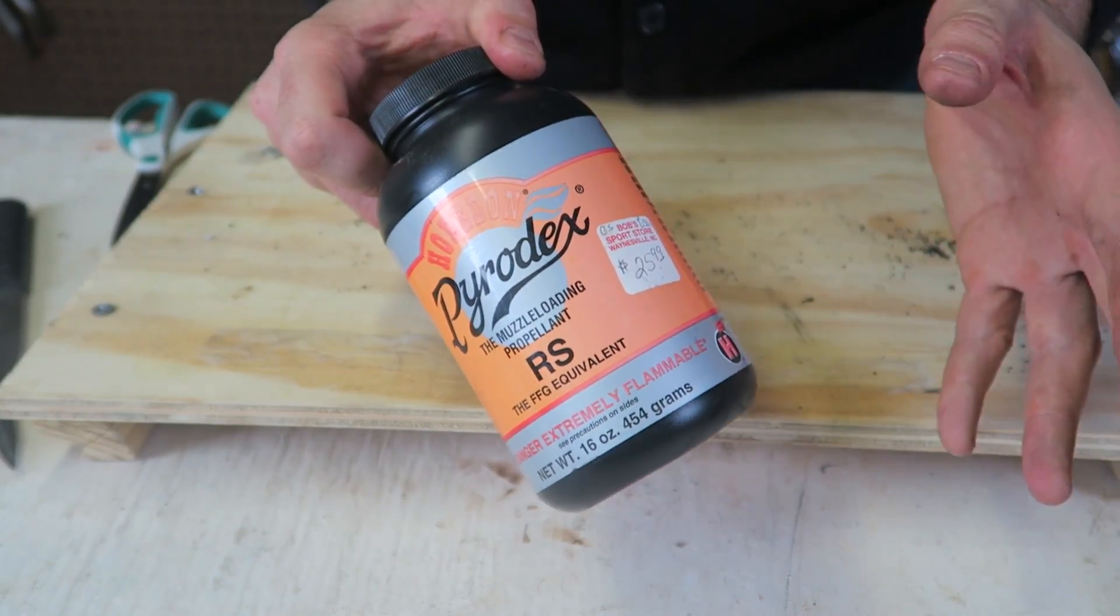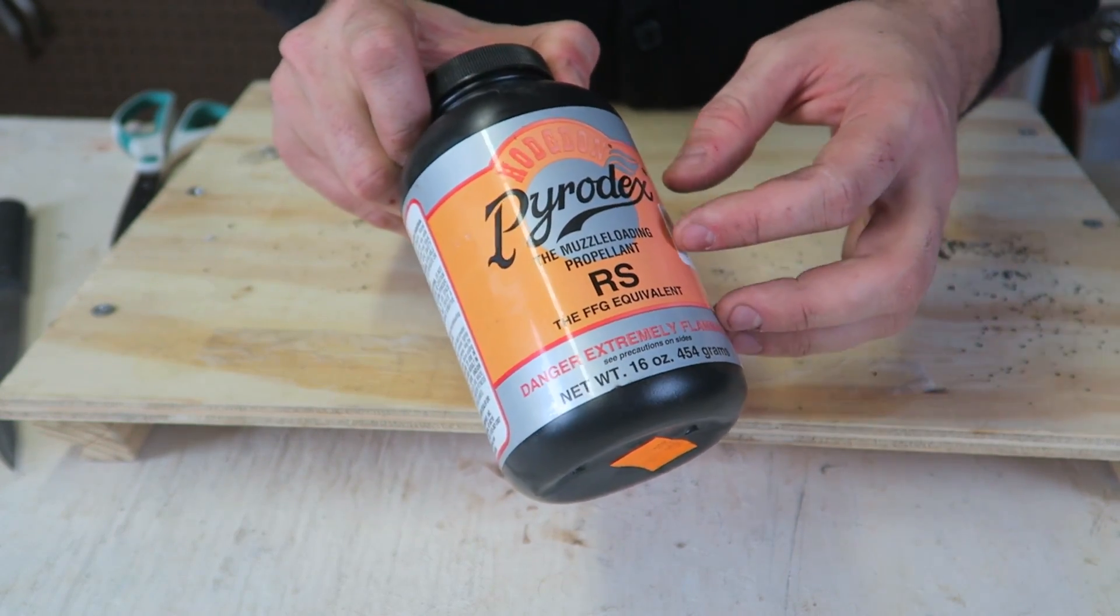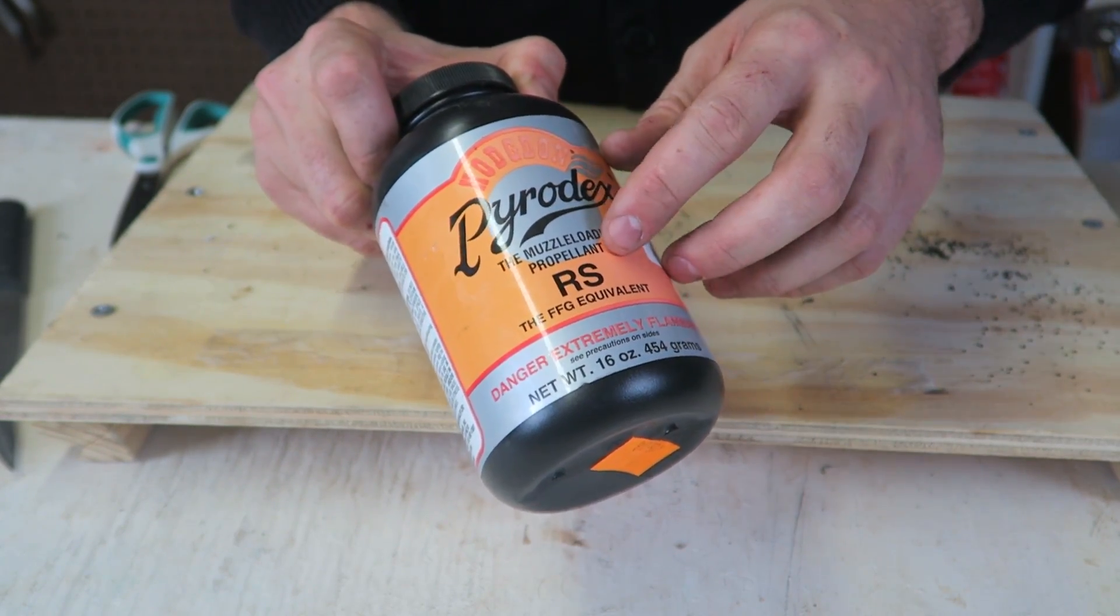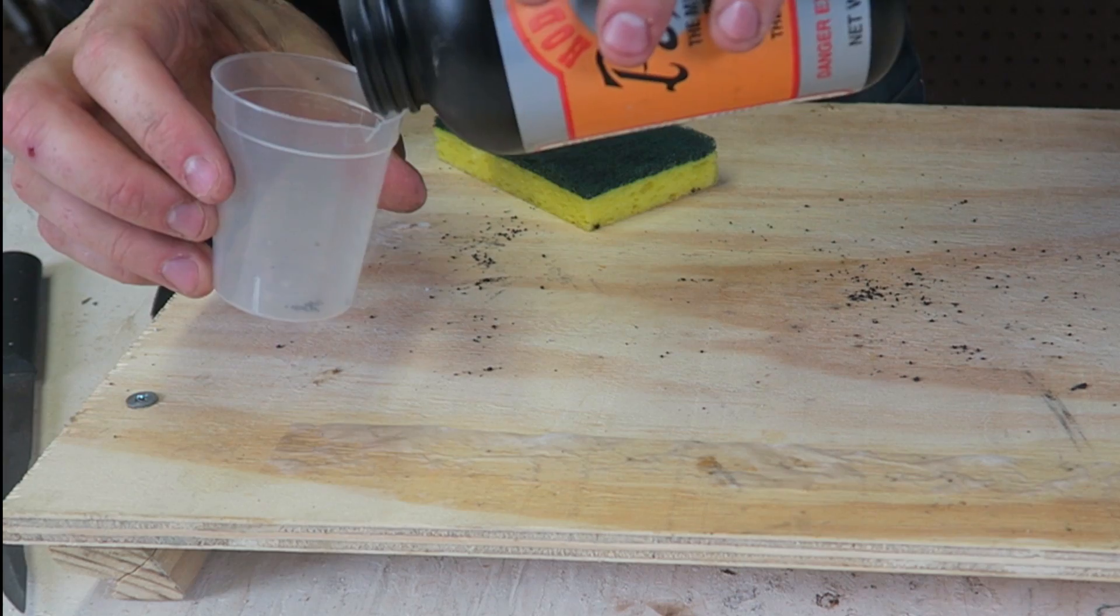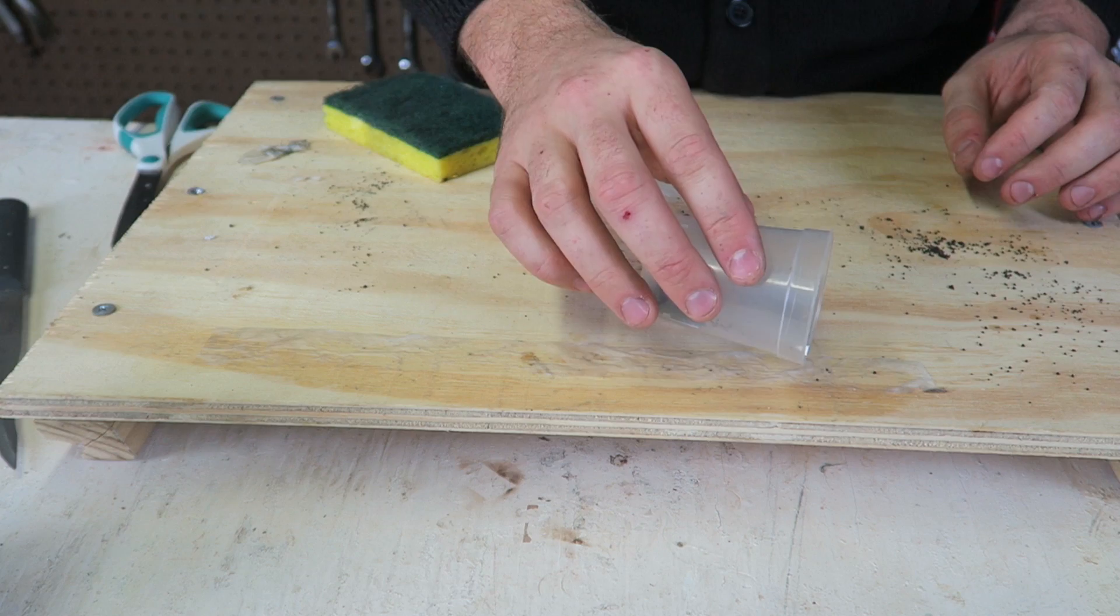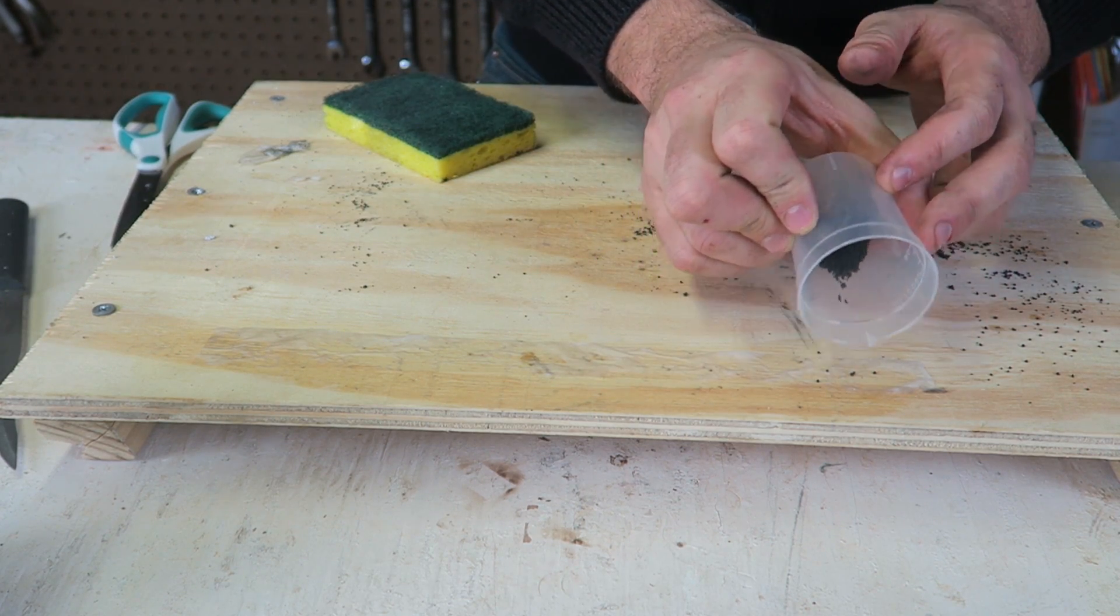The best to use is milled black powder. I'm going to be using this right here, the muzzle loading propellant. Let's see how this one does. I'm just going to do a small layer because I don't want to overdo it.